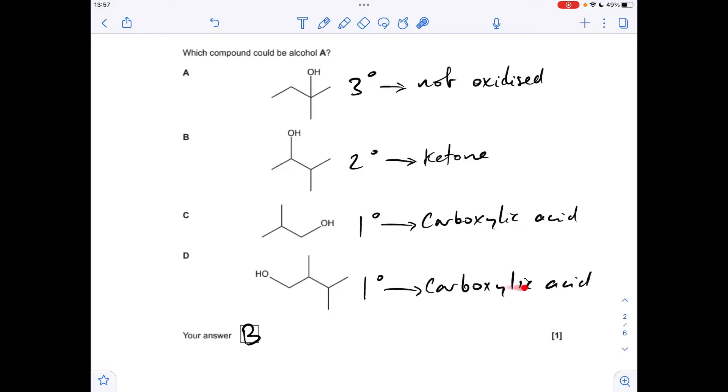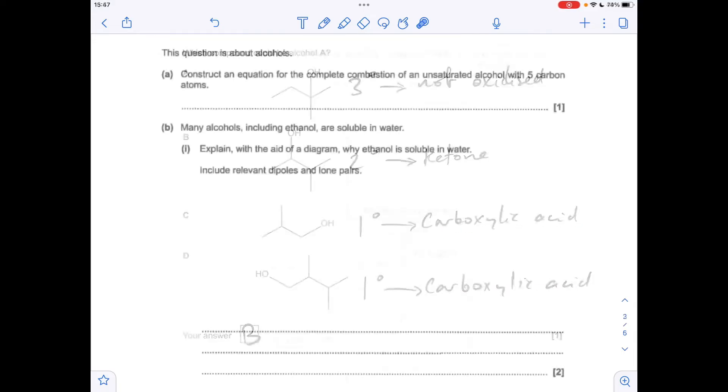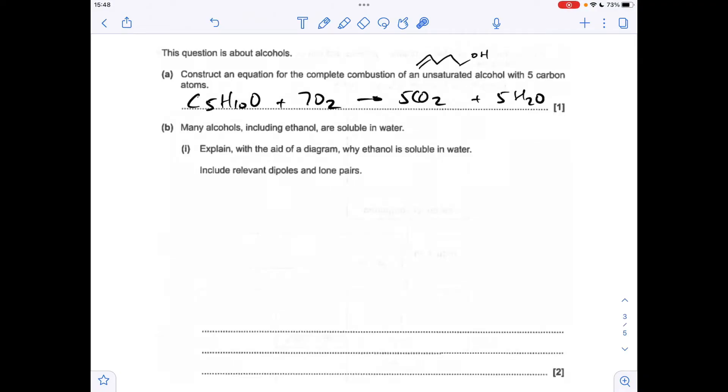Moving on to the main question now. We've got an unsaturated alcohol with five carbon atoms, we've got to do the equation for complete combustion. There's so many options available here for this, I'm just going to go for a straight chain alcohol, five carbons, one double bond. The important thing to remember obviously is with complete combustion you get carbon dioxide and water produced.